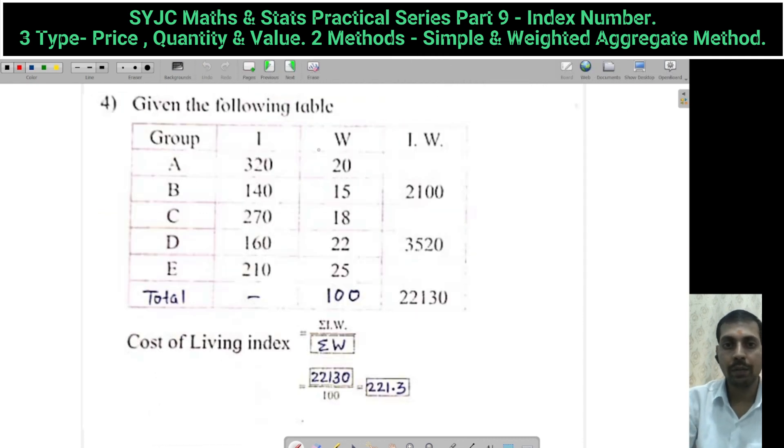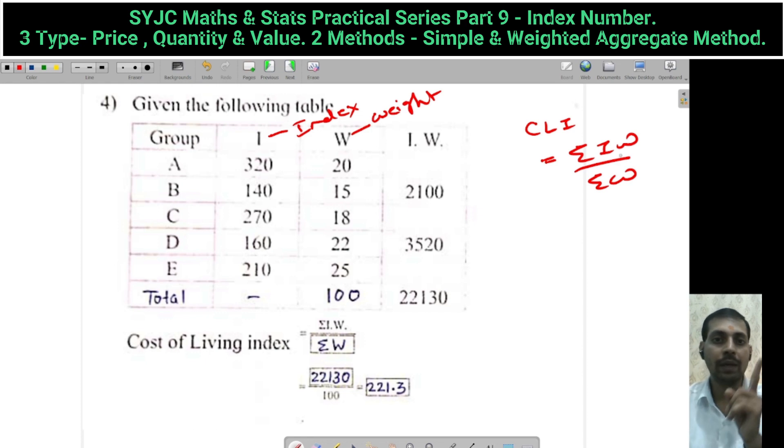Next: IW. I means index and W means weight. Now we know that CLI, that is family budget method: summation IW upon summation W. Keep in mind, this formula does not have into 100 - that's a basic mistake in exams. I already calculated here the total, and total is directly given as 21 to 130, so I got the answer.